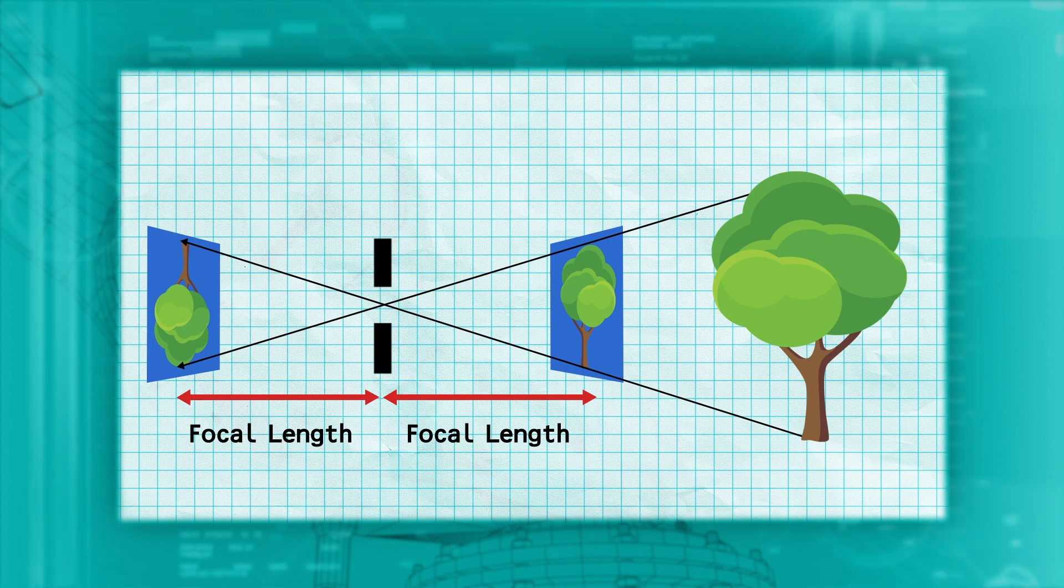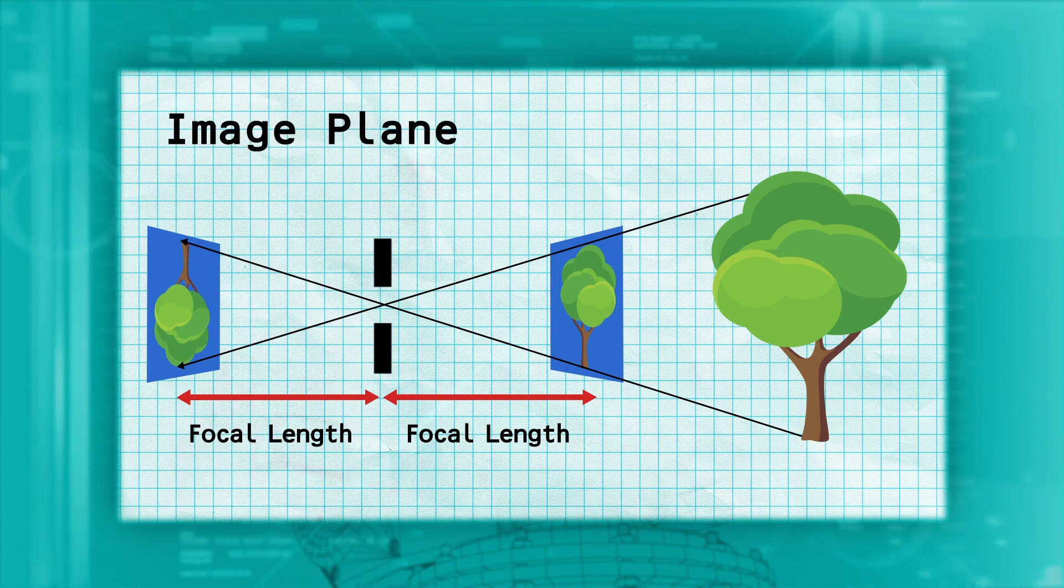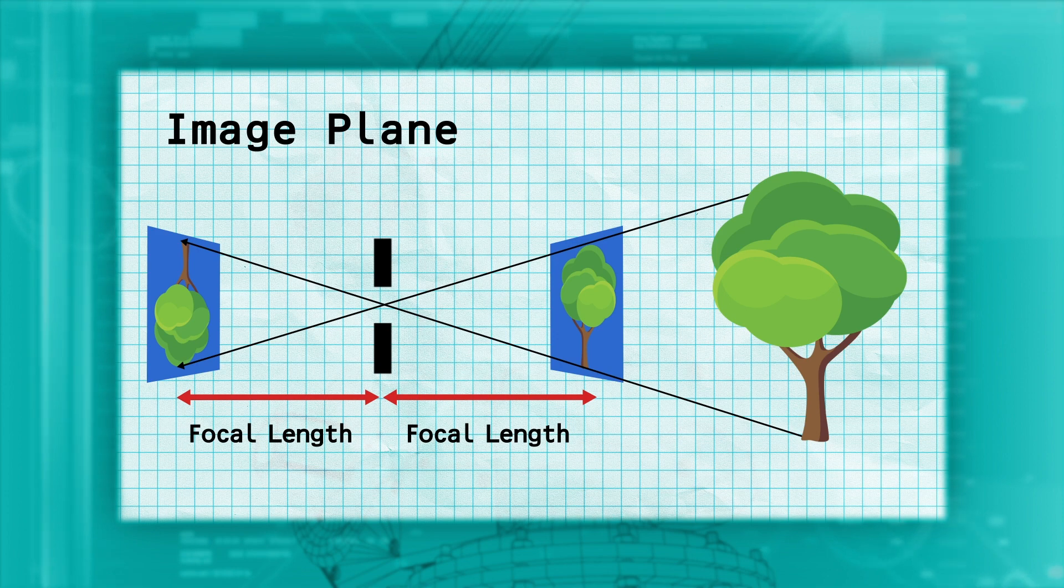We call this new image the image plane, and it's almost always used instead of the actual image on the sensor when describing what the robot sees.